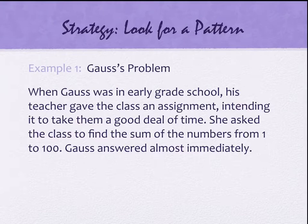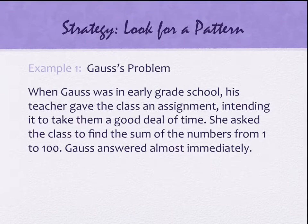The teacher asked them to find the sum of the numbers from 1 to 100, expecting them to go 1 plus 2 plus 3 plus 4 plus 5 — and you can see why that approach would take a long time. Unfortunately for her, her student Gauss answered almost immediately. I'd like to show you what strategy he employed at a very young age.